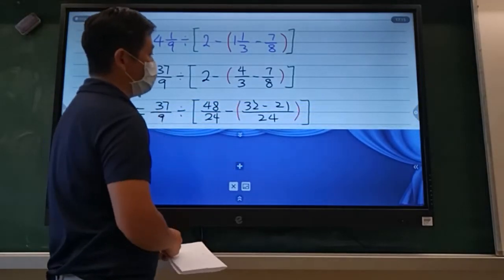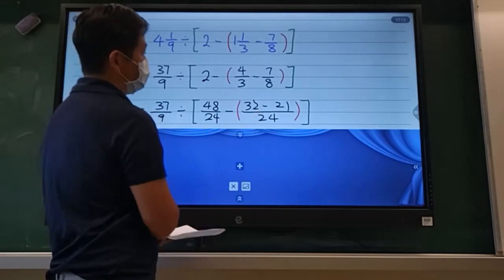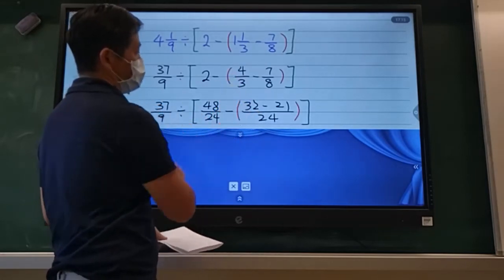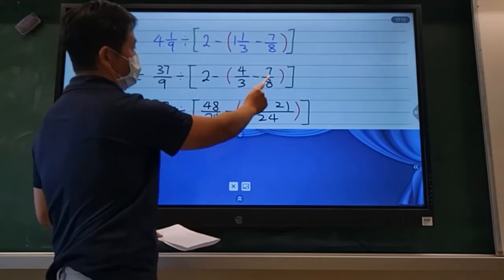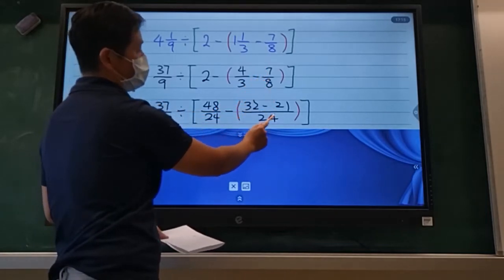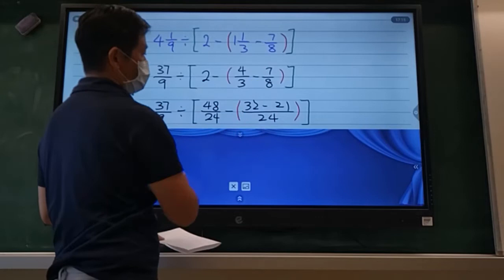Okay? So 24, 3 times 8 is 24, so 4 times 8 is 32. 7 times, let's see, 8 times 3 is 24, so 7 times 3 is 21.